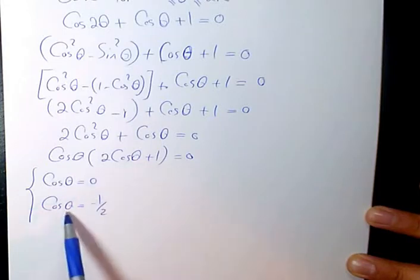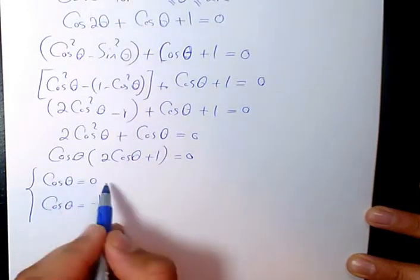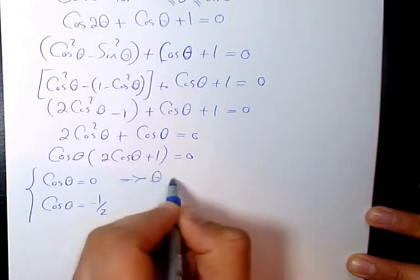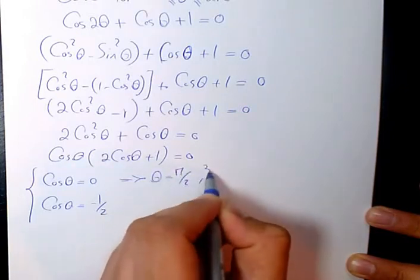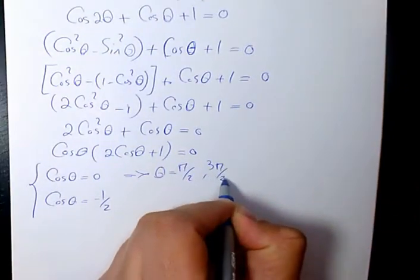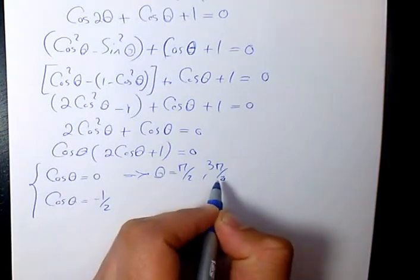It means that cos(θ) is -1/2. cos(θ) = 0 gives π/2 and 3π/2. This is the answer for the first case.